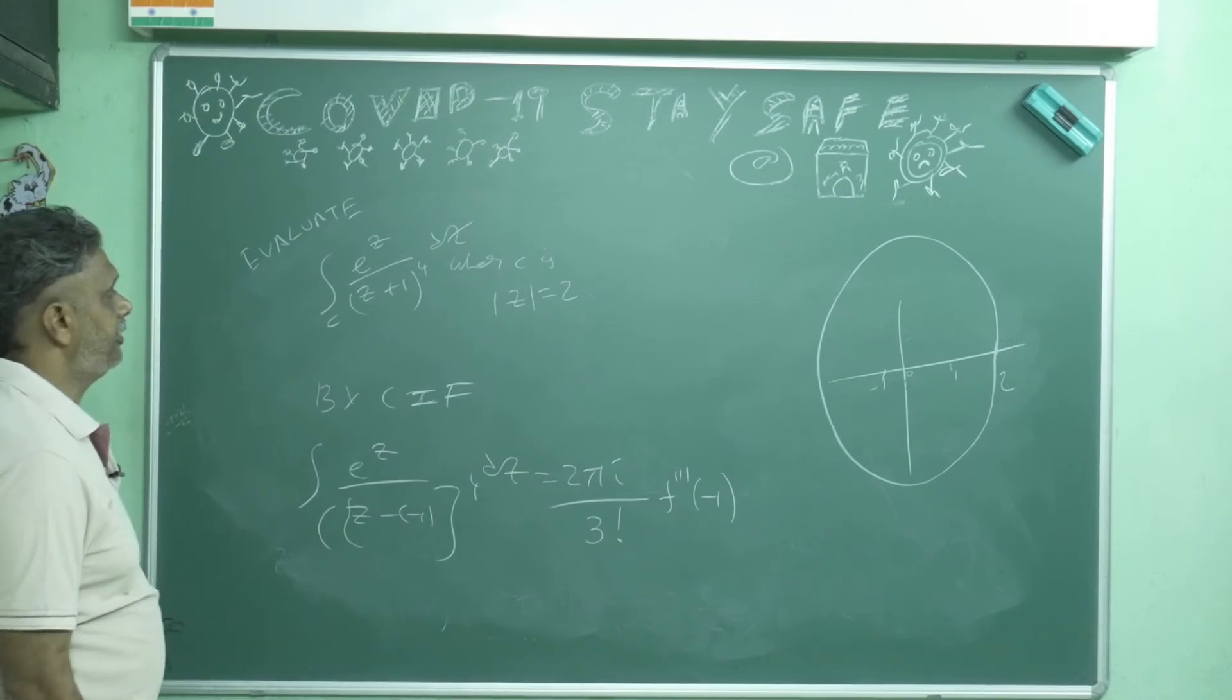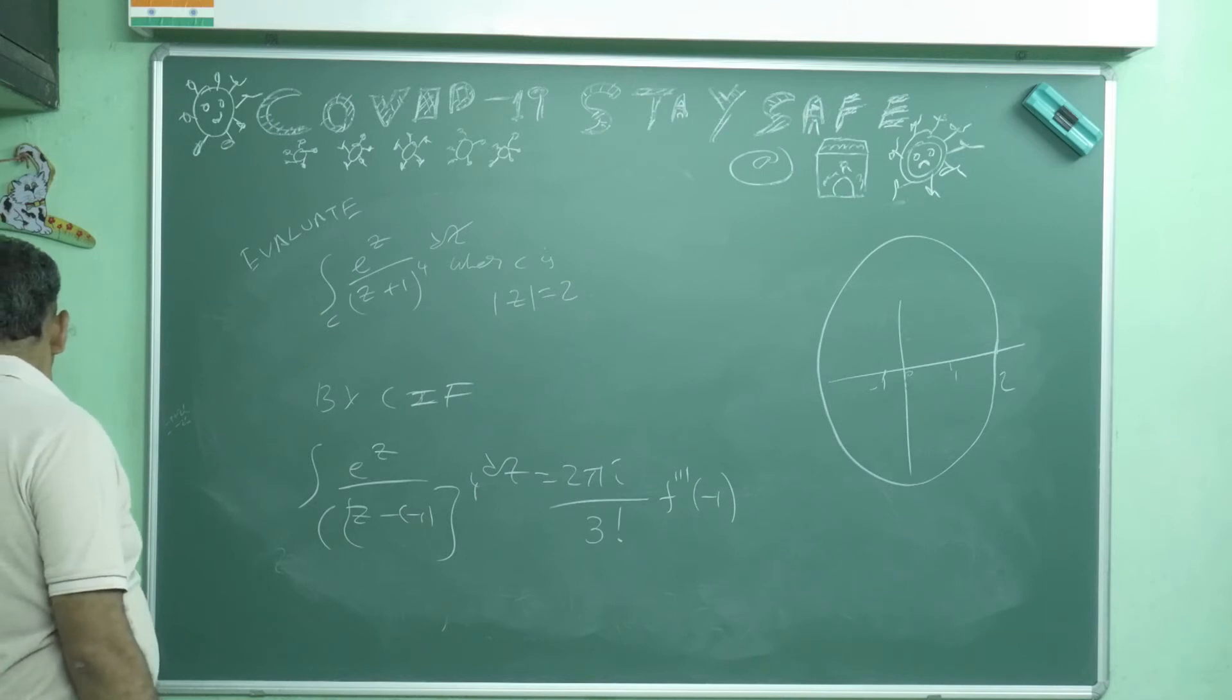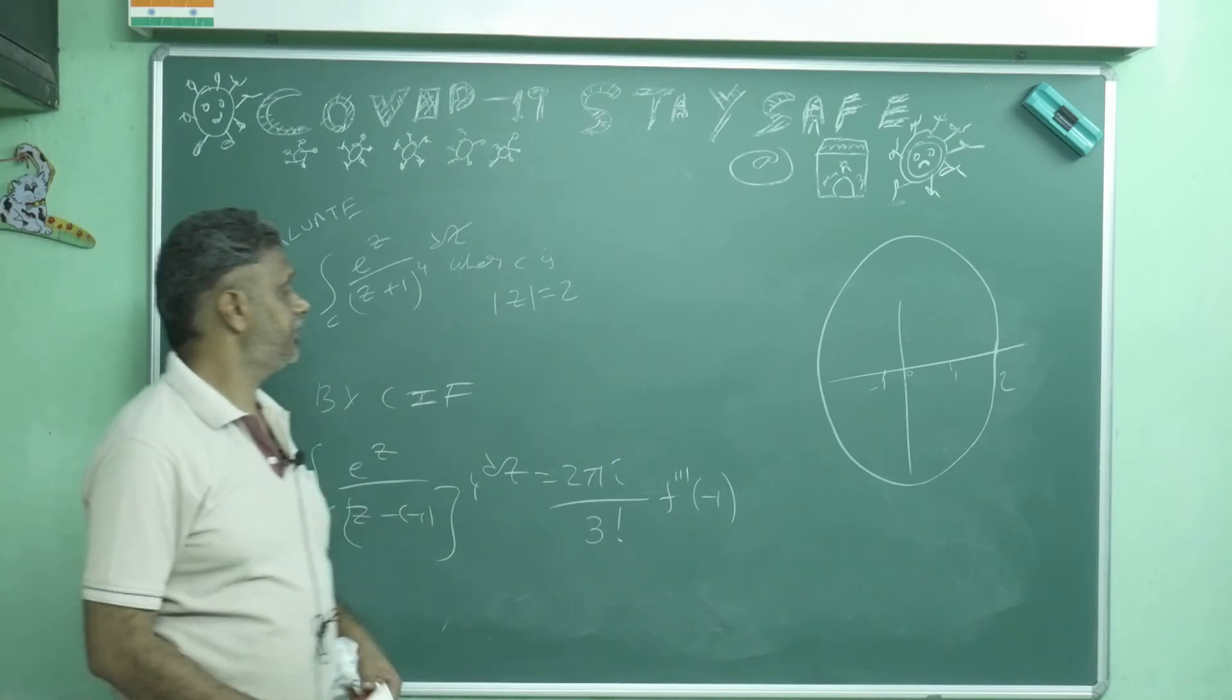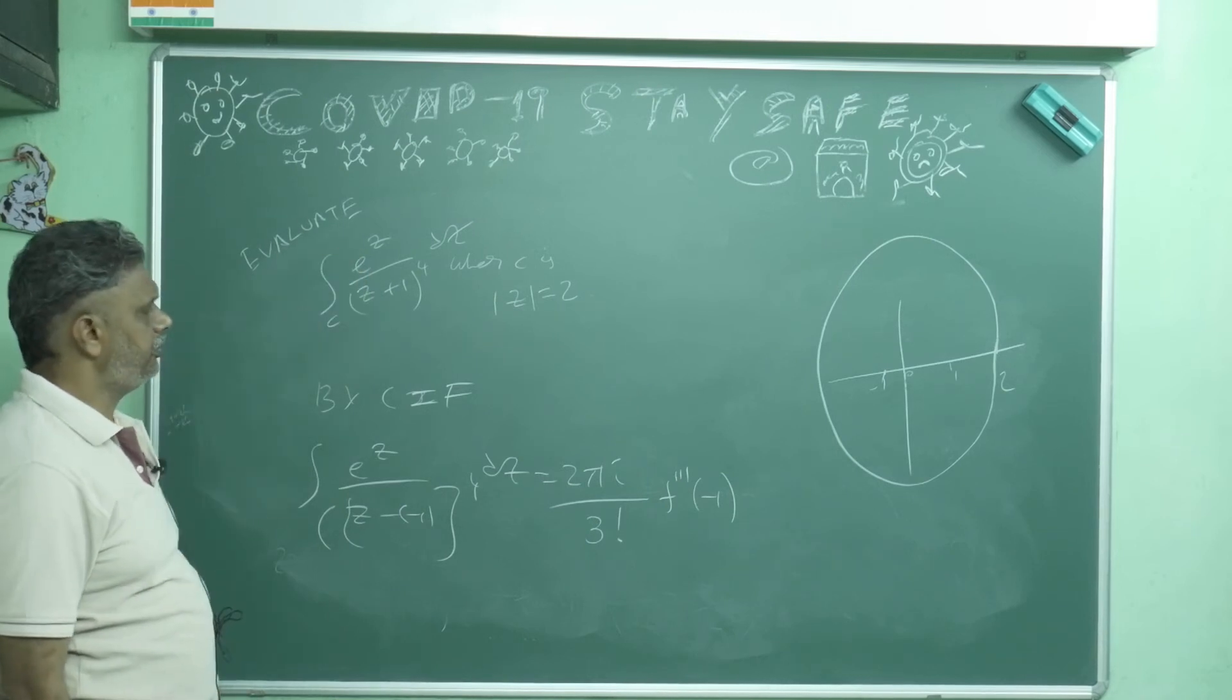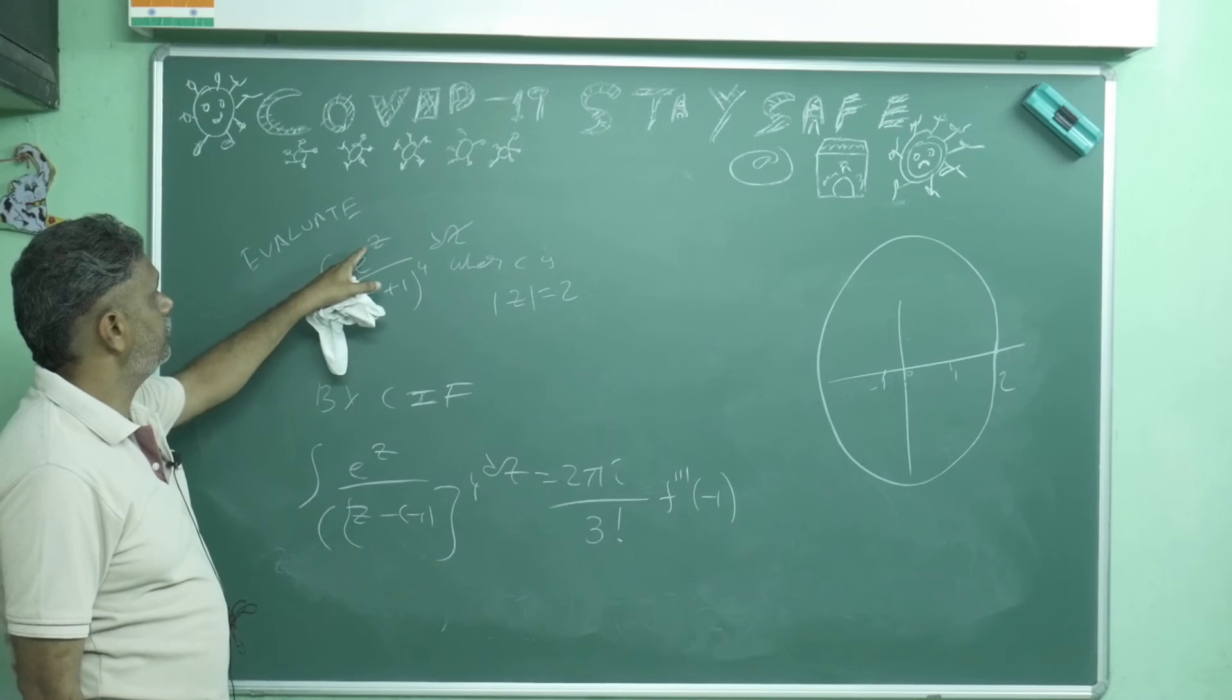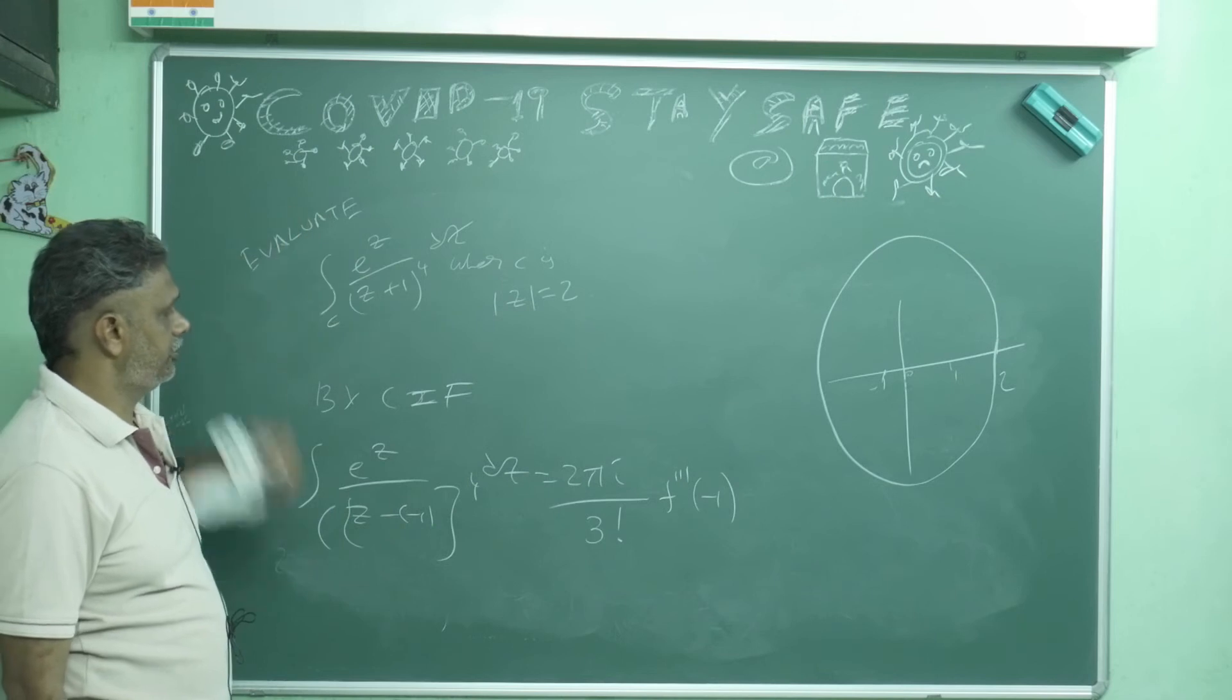Now who is f of z? e power z. If you do e power z 3 times, you will get 3 times only. This is e power 2z now. Maybe some textbooks have e power 2z. I have not copied properly. If e power z only, you can do, nothing will happen. E power 2z means what you will get? 2 into e power 2z, 4 into e power 2z, 8 into e power 2z. Just I have forgotten this, you can do.